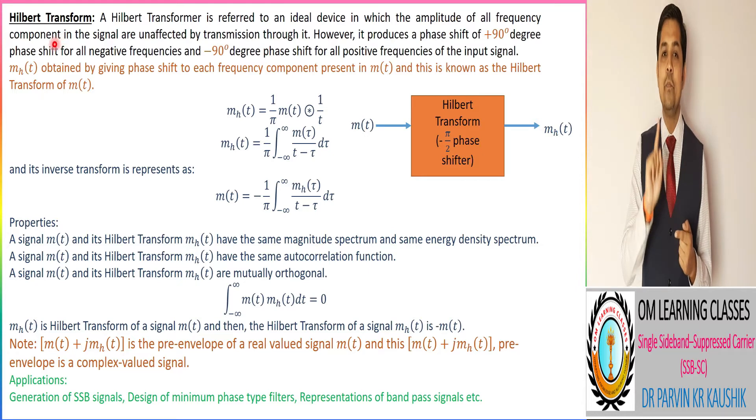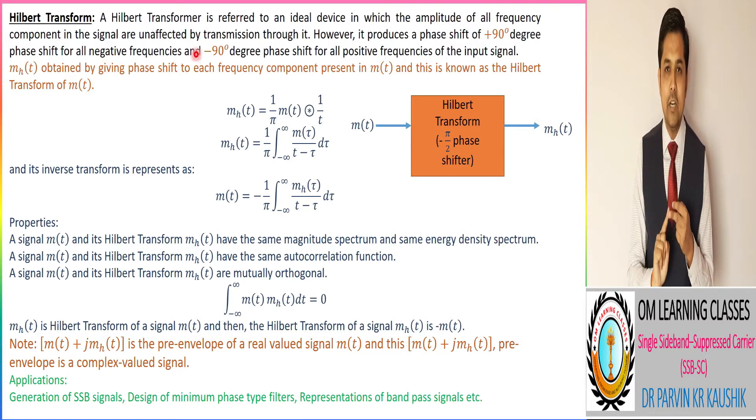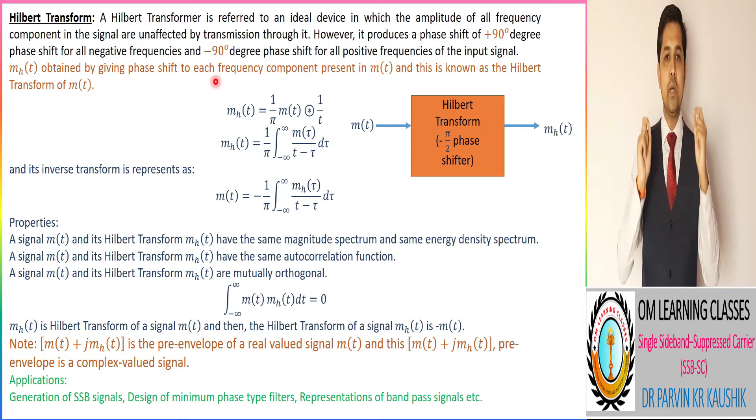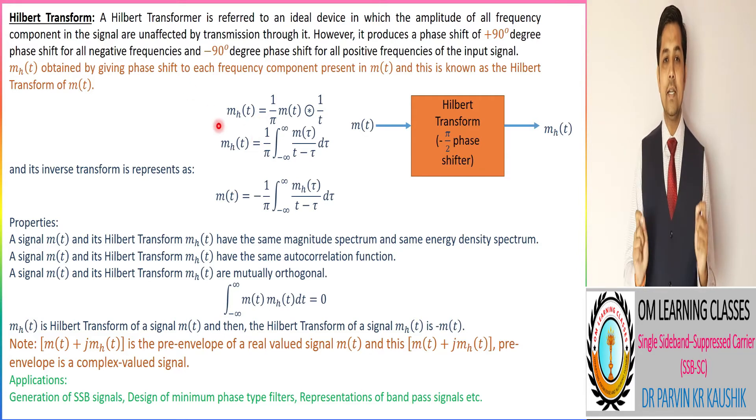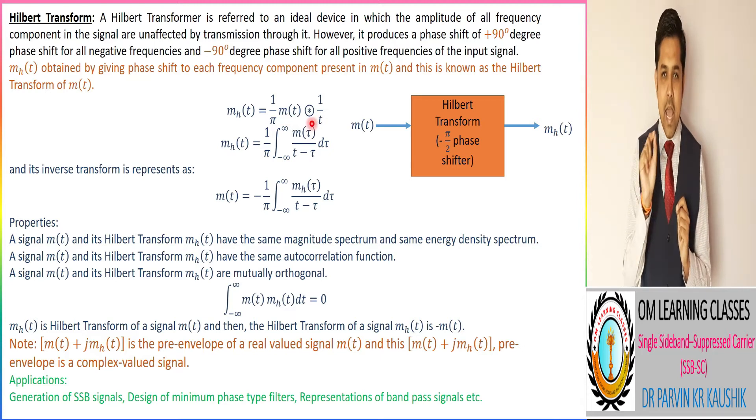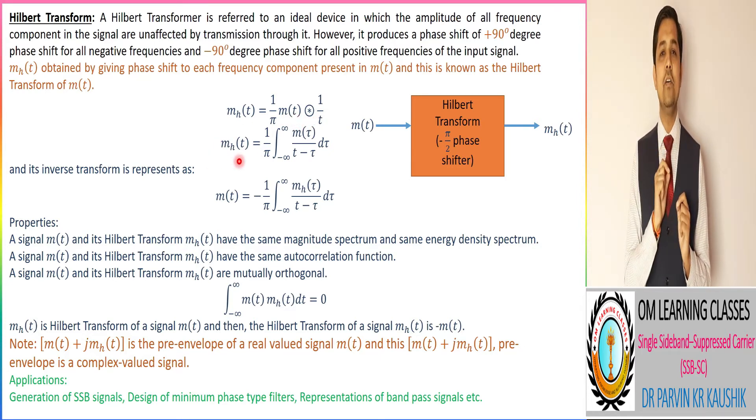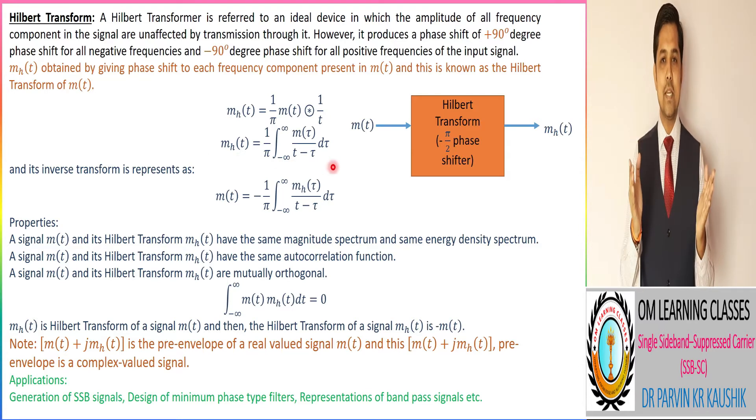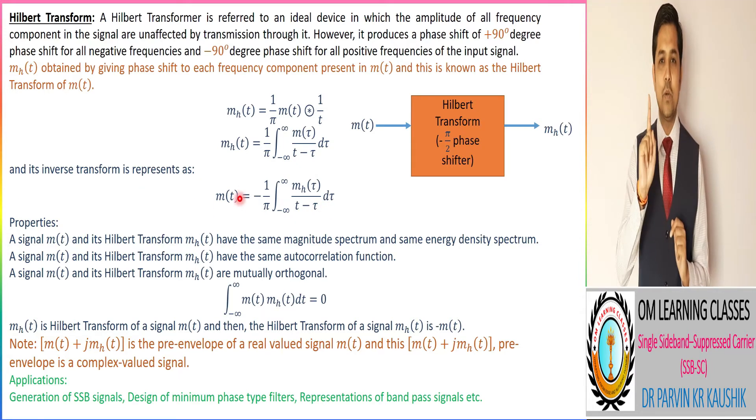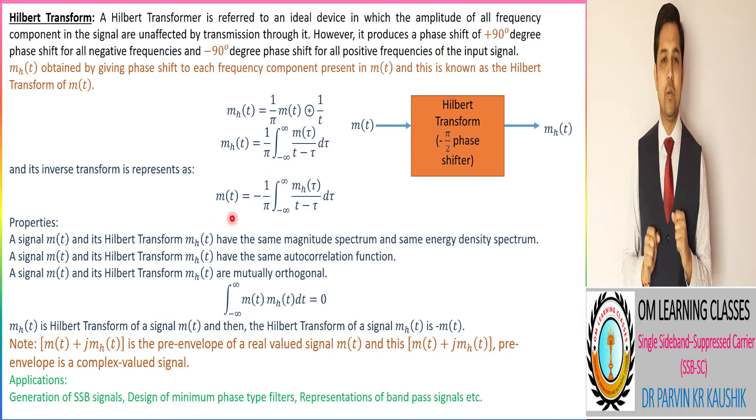As per both observations, we get the MHD signal which is equivalent to 1 by π into mt convolution with 1 by t. And as per convolution formula, we get the MHD as per this equation, and we can also take its inverse transform. There is very important minus is also there, so you must remember about it.